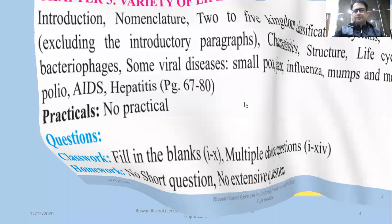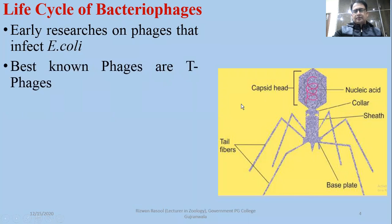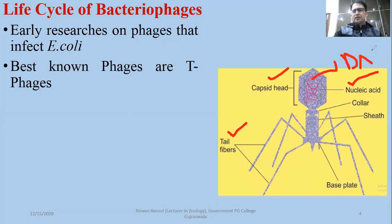First of all, you have studied the structure of Bacteriophages which was shared previously. In the structure of Bacteriophages there are two main portions: head and tail. The head is made up of protein, capsomeres are its units, and the head encloses the nucleic acid. In this Bacteriophage, the nucleic acid is DNA.